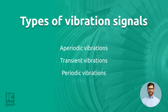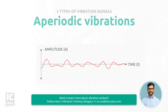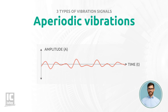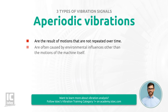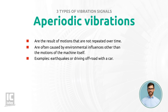It is important to note that not every signal can easily be represented by a sum of pure harmonic vibrations. Aperiodic vibrations are the result of motions that are not repeated over time and are thus random. As they are not repeated continuously, it is not possible to predict this vibration behavior. In industrial environments, aperiodic vibration signals are often caused by environmental influences other than the motions of the machine itself. Examples include vibrations caused by earthquakes or driving off-road with a car.